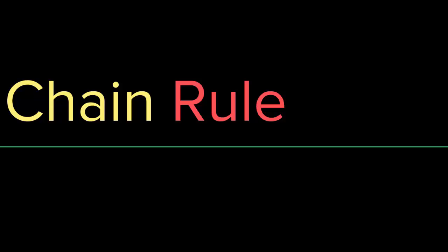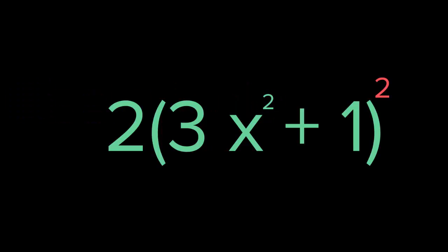The chain rule is our seventh rule. What is the chain rule and why do we use it? The chain rule is used in order to differentiate composite functions.